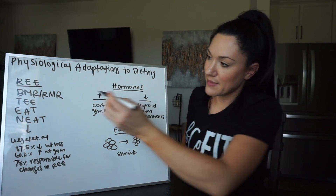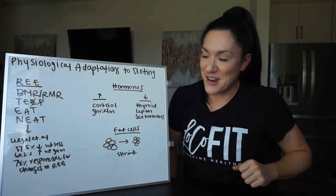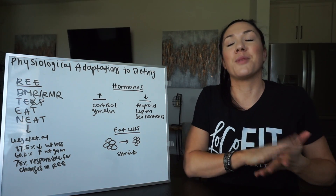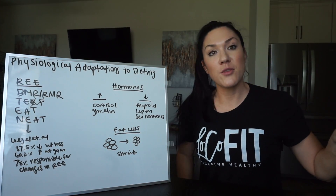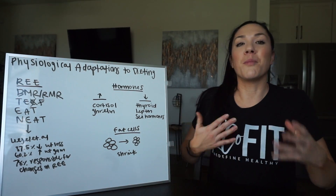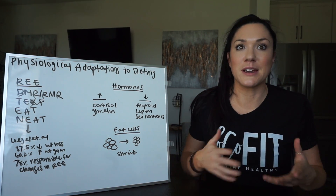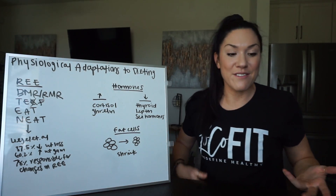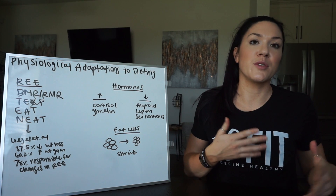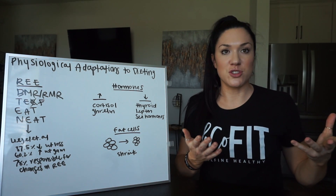TEF is the thermic effect of food — basically, how many calories you burn while digesting your food. This is going to go down very normally when you're eating less food — not a big surprise. You weigh less, your RMR is a little less; you eat less, your TEF is going to be less. There are certain foods that have a higher thermic effect. Protein is the highest, whereas dietary fat is less. So if you have a higher protein diet, you will keep this portion up, but just know that TEF will go down with less food.